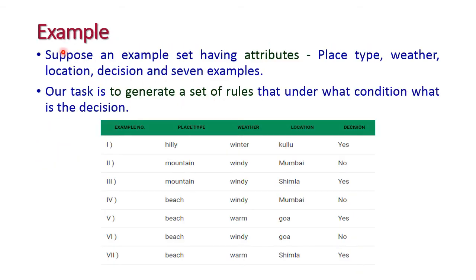To understand inductive learning further, we will see another example. Here we have a set of examples with the attributes: place type, weather, location, and decision. We have seven different examples. Our task is to generate a set of rules — under what conditions and what is the decision.